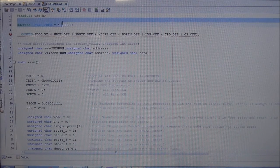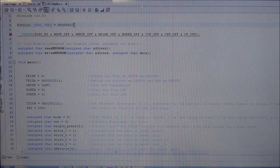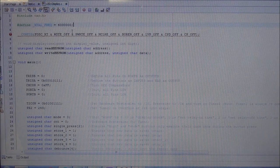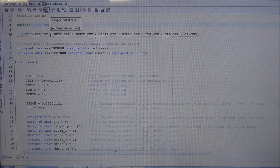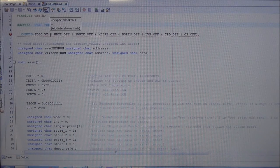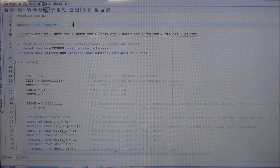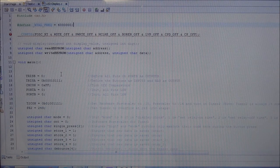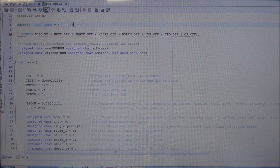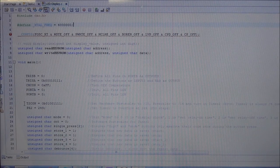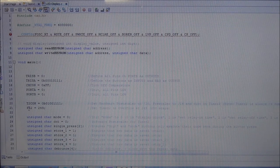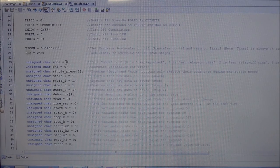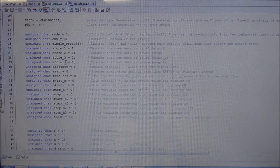I start by defining the frequency we will use, that for the delay routine. I set the configuration bits because we will need an external oscillator. I have a few prototypes for the EEPROM read and write functions. And down here the important things are the timer 2 configuration and the PR2 register we talked about earlier. And we have all the variables and there's a lot.